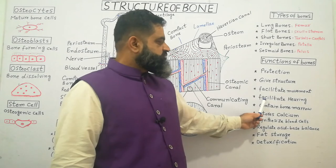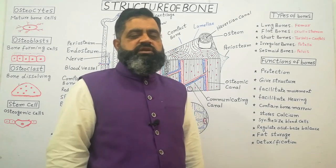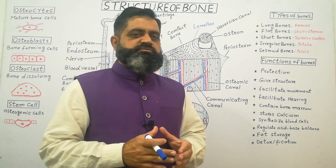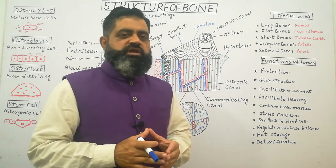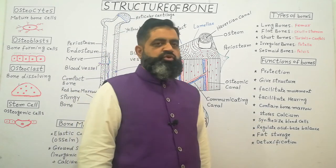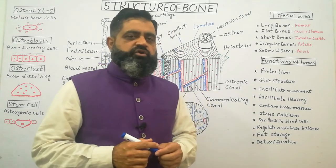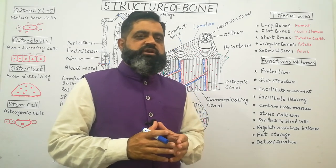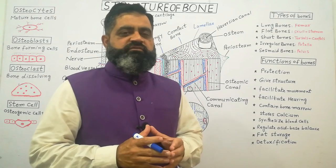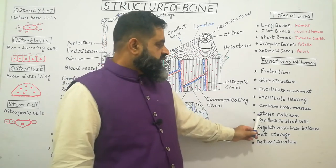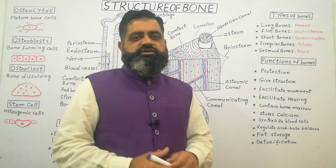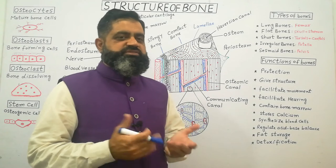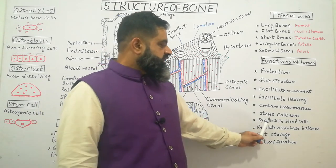Bones also facilitate hearing. The ossicles — the incus, malleus, and stapes — are bones present in the middle ear that vibrate to produce sound, helping us hear. Bones also contain bone marrow where fats can be stored, and red and white blood cells are produced. Additionally, bones store calcium and phosphorus, with extra calcium being deposited inside the bone matrix.